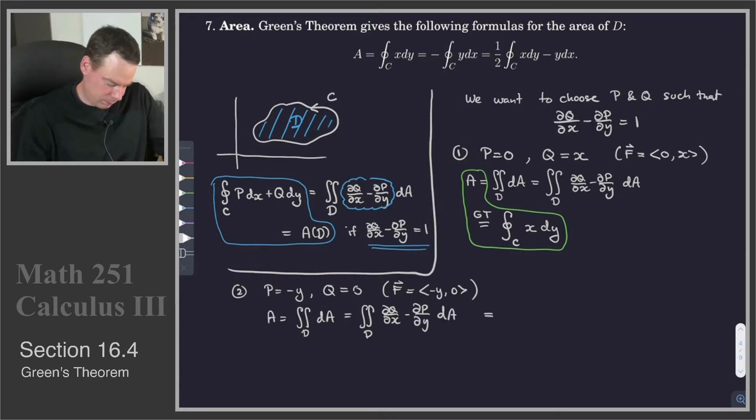And by Green's Theorem, that's equal to the integral around the curve of P dx, so that's negative y dx plus Q dy. Q is 0, so this becomes plus 0.